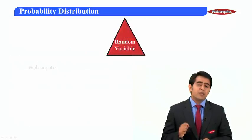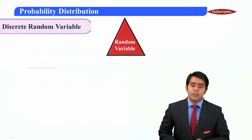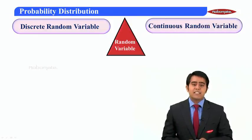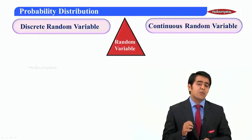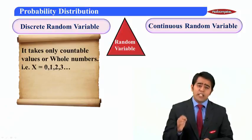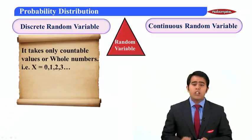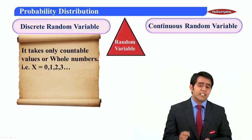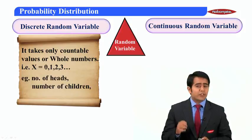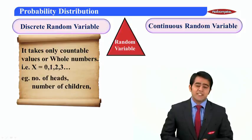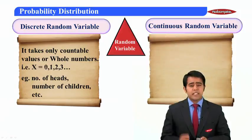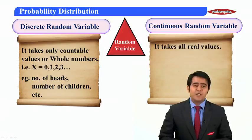Random variables are of two types: discrete random variable and continuous random variable. A discrete random variable takes only countable values or whole numbers - that is, x equals zero, one, two, three, and so on. Examples include the number of heads when tossing a coin, or the number of children in a family.